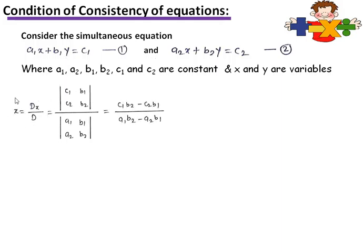With Cramer's rule we find the value of x, which is Dx upon D. In determinant form we write |c1 c2 / b1 b2| upon |a1 a2 / b1 b2|, and if we cross multiply or expand the determinant it becomes (c1·b2 - c2·b1) upon (a1·b2 - a2·b1).